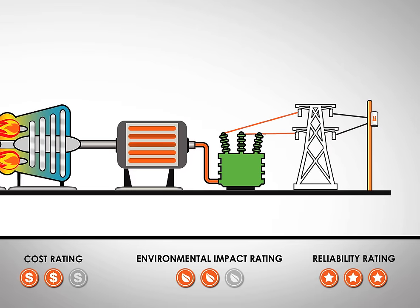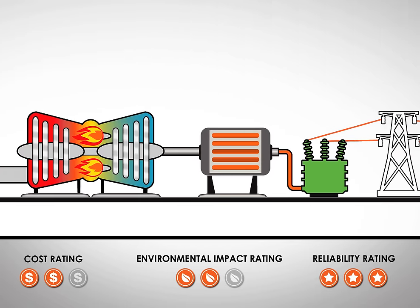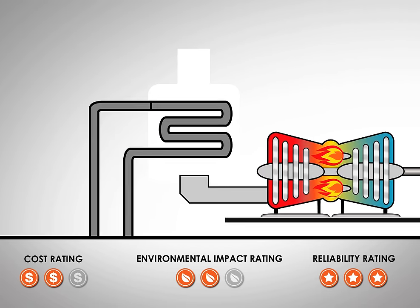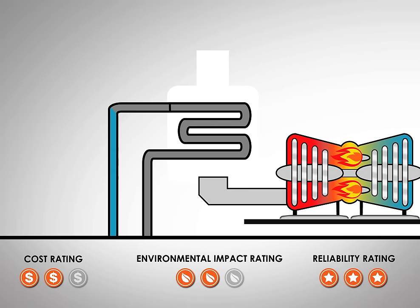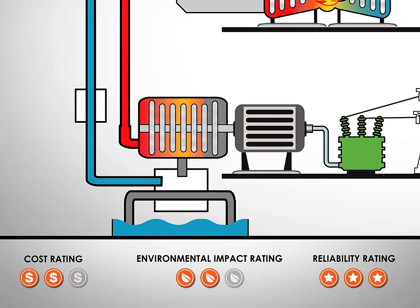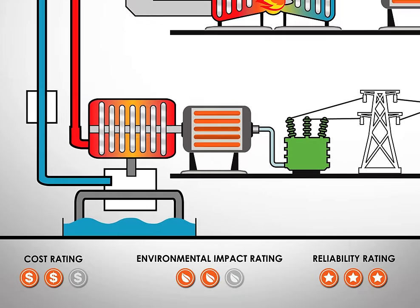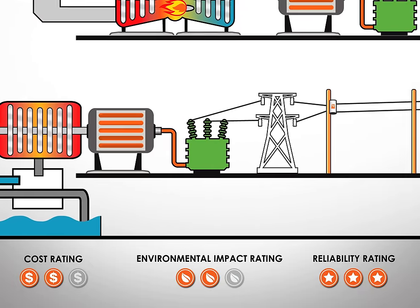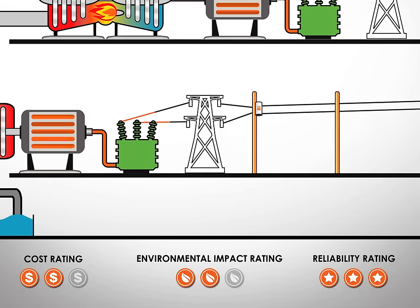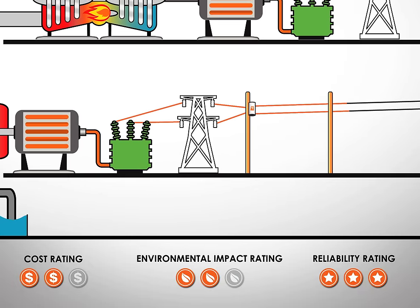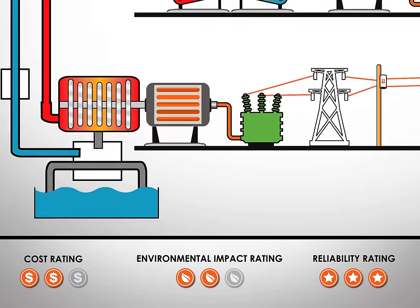The exhaust gas is used in a boiler to convert water to steam. The high pressure steam is directed into a turbine, which turns a shaft. This shaft is connected to a generator that makes power as it turns.